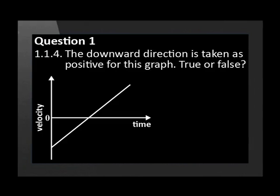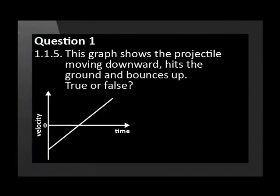The downward direction is taken as positive for this graph. This graph shows the projectile moving downward, hitting the ground and bouncing up.